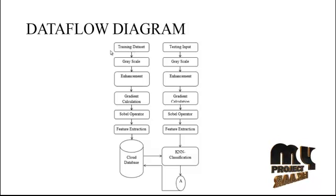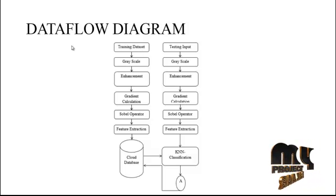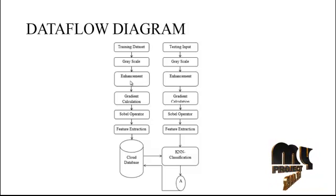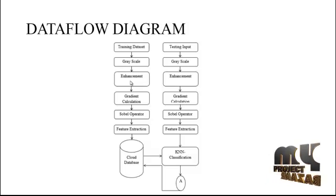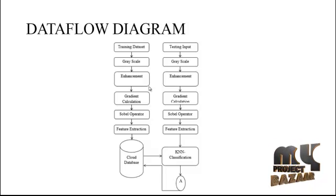First, we train the dataset. The training dataset contains leaf disease detections and includes disease images. The training dataset applies grayscale conversion and an enhancement process. In the enhancement step, it removes unwanted color from the leaves and extracts the outlines of the leaves.